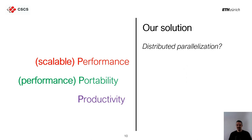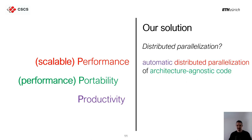How do we achieve efficient distributed parallelization? The solution must not only be efficient, but also address the three P's. We need automatic distributed parallelization of architecture-agnostic low-level code: automatic for productivity, distributed parallelization for performance, and architecture-agnostic low-level code for portability.